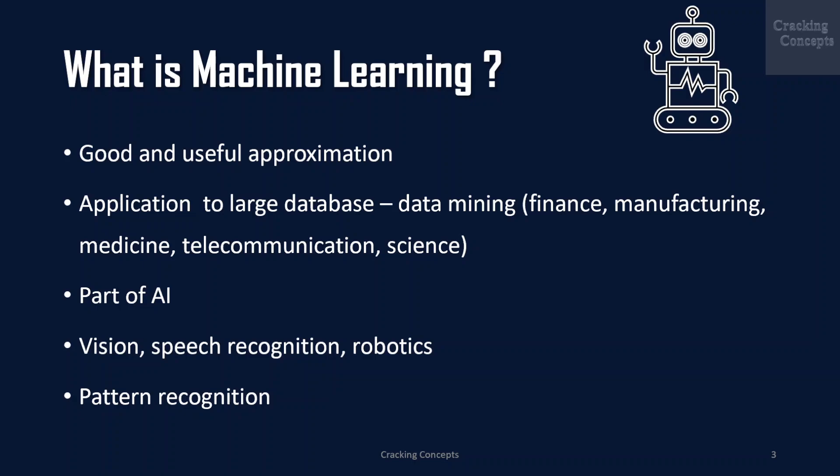In manufacturing, learning models are used for optimization, control, and troubleshooting. In medicine, learning programs are used for medical diagnosis. In telecommunication, call patterns are analyzed for network optimization and maximizing the quality of service. In science, large amounts of data in physics, astronomy, and biology can only be analyzed fast enough by computers. But machine learning is not just a database problem — it is also a part of artificial intelligence. To be intelligent, a system in a changing environment should have the ability to learn. Machine learning also helps us find solutions to many problems in vision, speech recognition, and robotics.